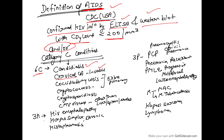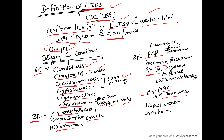Category C conditions can be remembered using mnemonics. There are six C's: candidiasis, cervical cancer (invasive), coccidioidomycosis, cryptococcus, cryptosporidiosis, and cytomegalovirus disease (other than liver, spleen, and nodes). Coccidioidomycosis and cryptococcus may be extrapulmonary. Then there are 3H's: HIV encephalopathy, herpes simplex (chronic), and histoplasmosis. The 3P's are: Pneumocystis carinii pneumonia, recurrent pneumonias, and PML (progressive multifocal leukoencephalopathy).